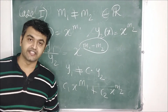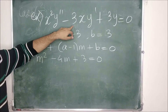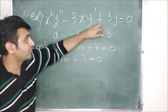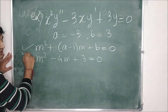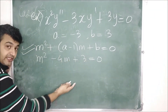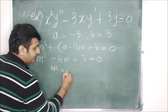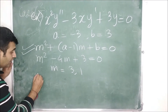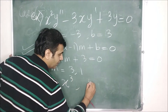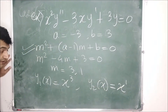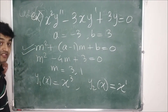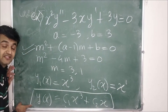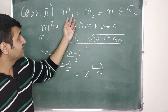Example: x²y'' − 3xy' + 3y = 0. Here a = −3 and b = 3. The auxiliary equation gives m² + (−3−1)m + 3 = 0, which factors as (m−3)(m−1) = 0, so m = 3 and m = 1. The roots are real and distinct, giving y₁(x) = x³ and y₂(x) = x, so the general solution is y = c₁x³ + c₂x.